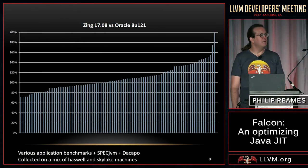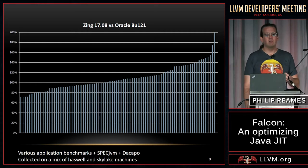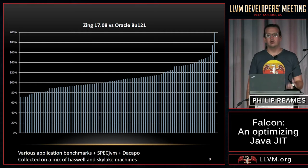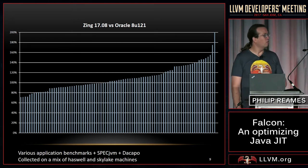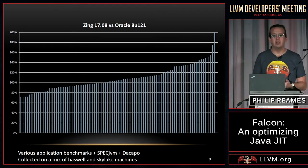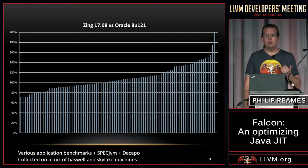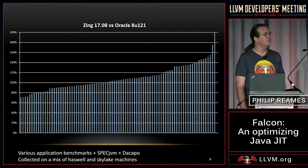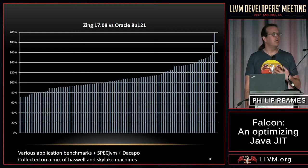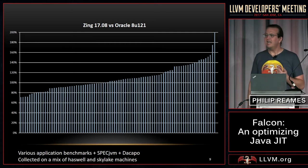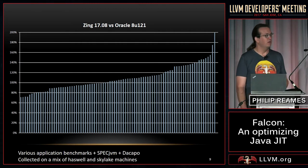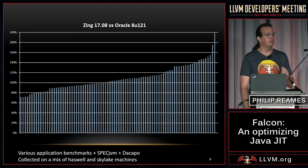This is probably the slide most people are most interested in — the performance slide. What we're looking at is the ratio of peak performance of the most recent Zing version to a randomly chosen Oracle version across a spectrum of benchmarks. The key thing is the line going across the middle at 100%, which is the break-even point. In many cases Falcon is ahead and in a few cases behind, but we are performance competitive with C2 in the Oracle JVM across the overall spectrum — which is a rather high bar to clear, since C2 and JVMs are some of the best JIT compilers out there.